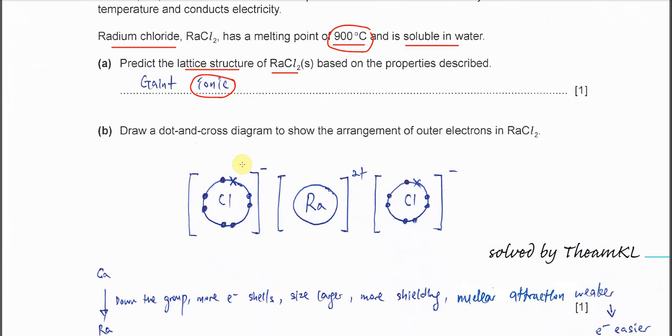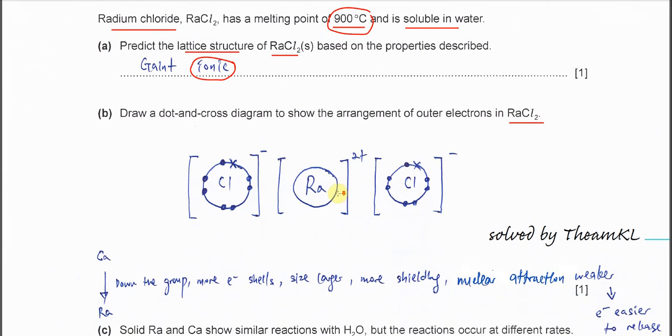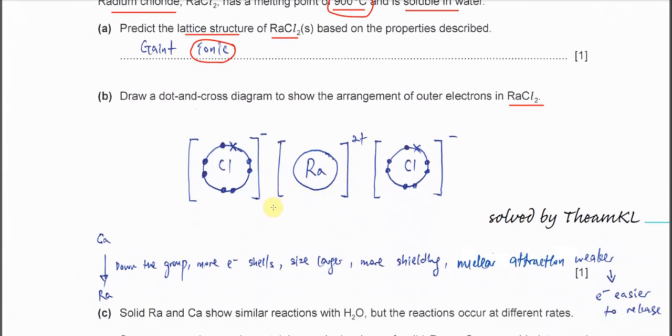Draw the dot-cross structure or dot-cross diagram for this radium chloride. It's better for you to show both chlorides. The dot-cross, you must at least use dot and cross to distinguish the electrons from which species.